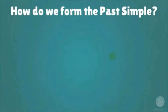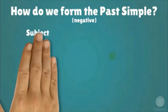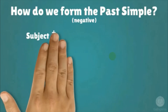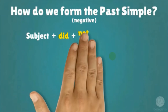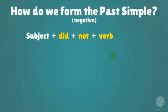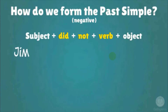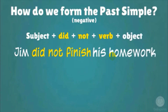How do we form the past simple negative? Subject plus did not plus verb plus object. For example: Jim did not finish his homework.